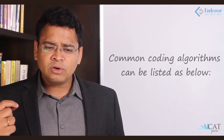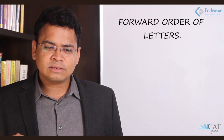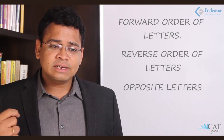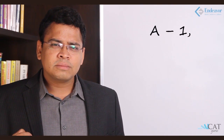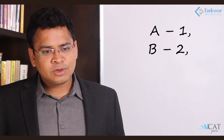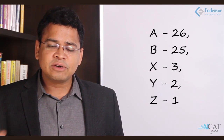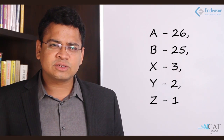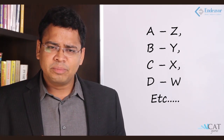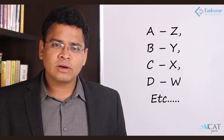There are common coding algorithms: forward order of letters, reverse order of letters, and opposite coding of letters. In forward order, A is coded as 1, B as 2, and so on up to Z as 26. In reverse order, A is given 26, B is 25, down to Z as 1. For opposite letters, A is coded as Z, B as Y, C as X, D as W, and so on — a proper mirror reflection.